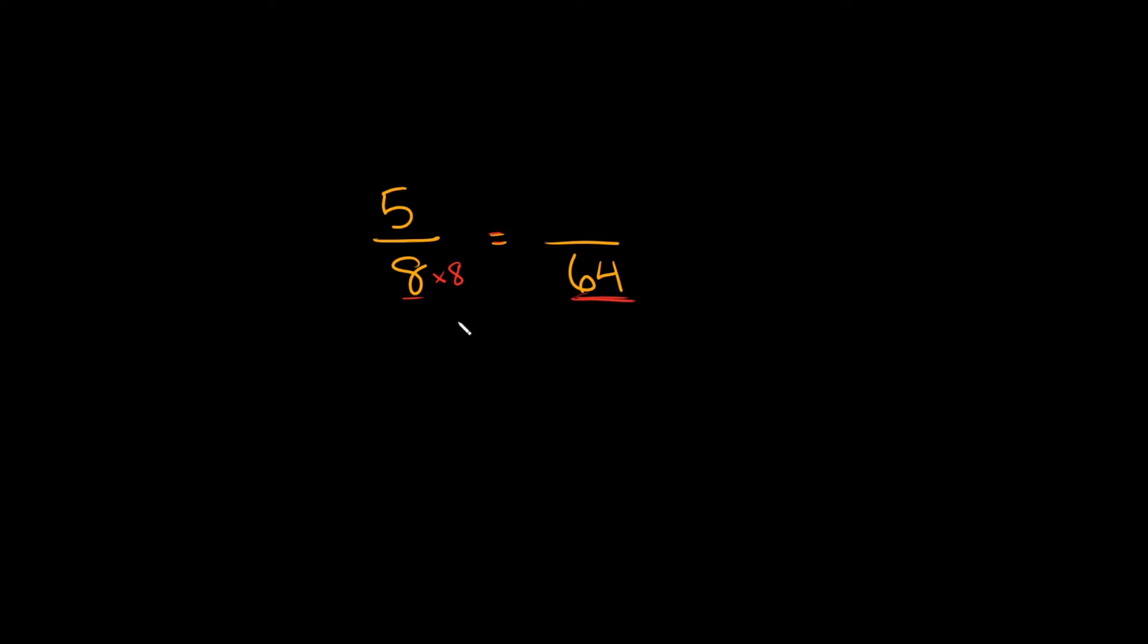Okay, but remember for equivalent fractions you have to multiply the bottom and the top by the same number. So if we're going to multiply by 8 down here we also have to multiply by 8 up here. Okay, so what's 5 times 8? That would be 40. Okay, so 5 eighths is equivalent to 40 over 64.